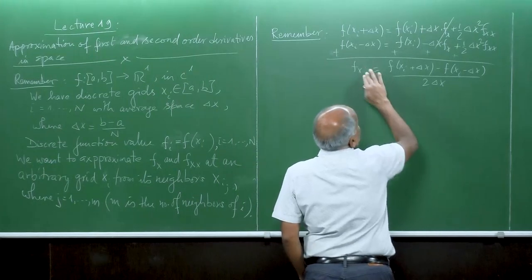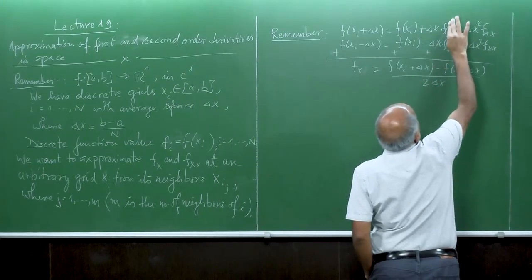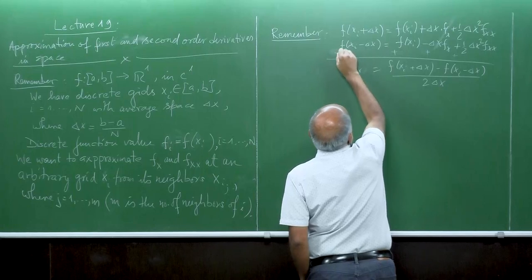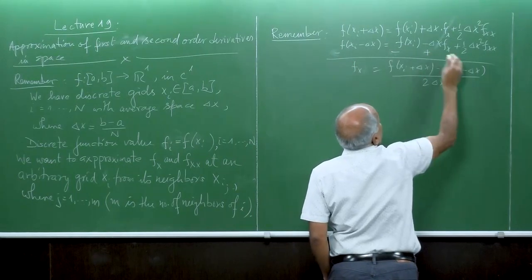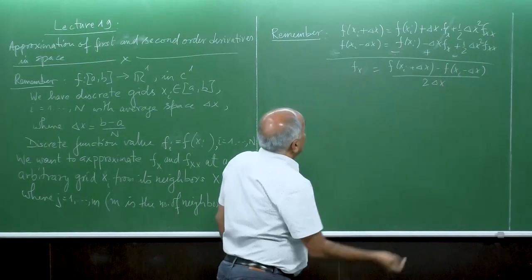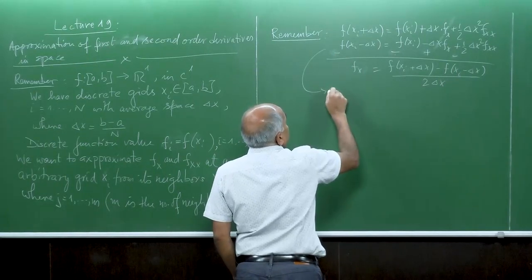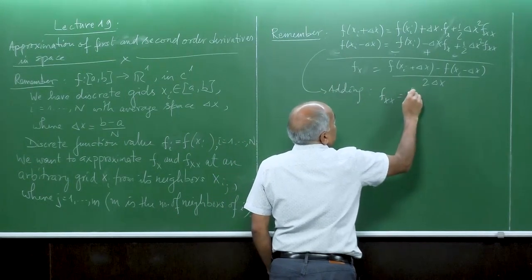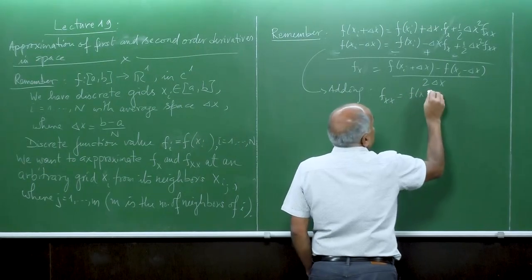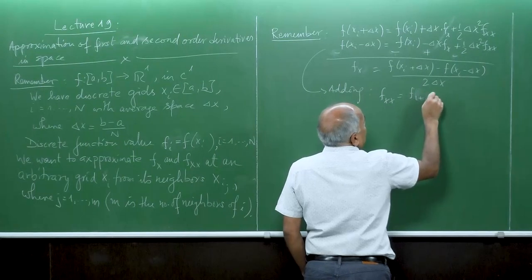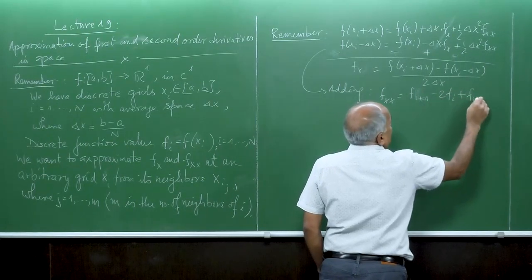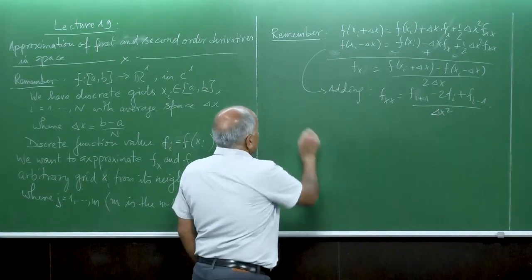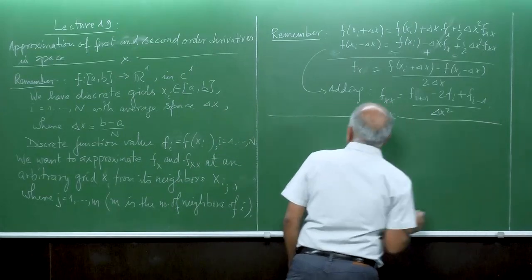When we subtract or add those two equations appropriately, we also get f_x = [f(x_{i+1}) - f(x_{i-1})] / (2 delta x). This was the finite difference formula. Now in the meshfree approach, we again use Taylor's expansion.